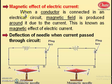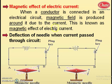Once again, revise the definition: when a conductor is connected in an electric circuit, magnetic field is produced around it due to the current. This is known as the magnetic effect of electric current. Here are two diagrams by means of which we can understand the magnetic effect of electric current.